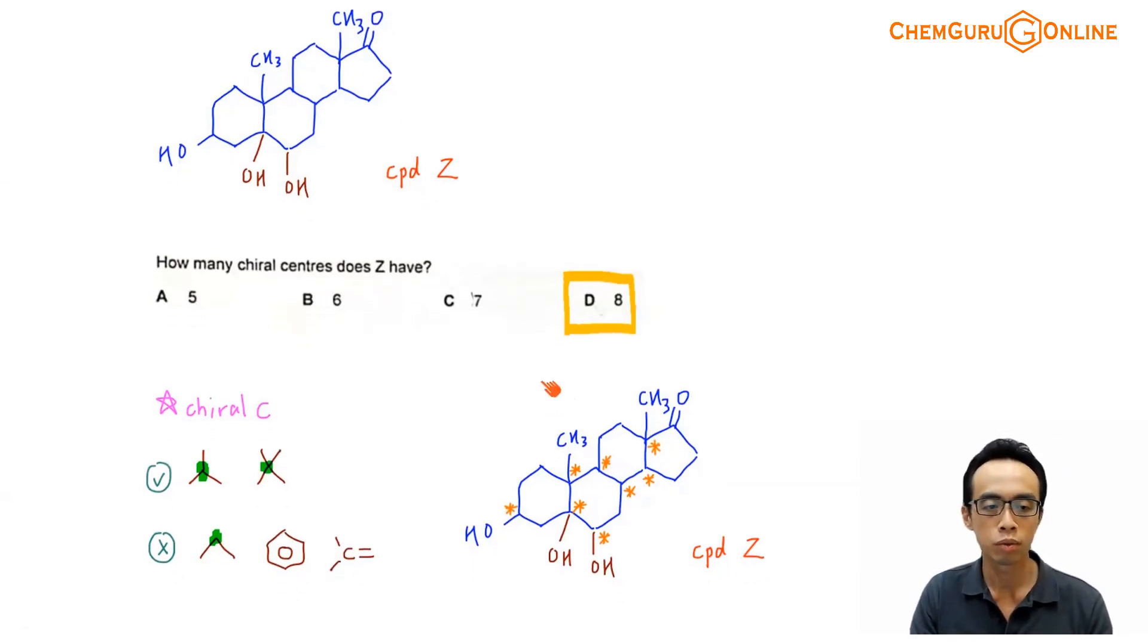We can now answer the question when we look back at the options A, B, C, D. We already know that Z has eight chiral carbons, so the answer to this question would be option D.